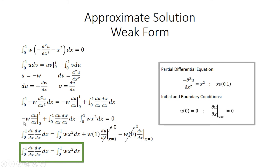We expand the first term and rearrange the equation, setting the second term equal to the first and third terms. Expanding gives w of 1 times the partial derivative of u with respect to x at x equals 1, minus w of 0 times the partial derivative of u with respect to x at x equals 0. Since the partial derivative at x equals 1 is 0 and w of 0 is also 0, both terms cancel, leaving us with our final weak form shown in the green box.